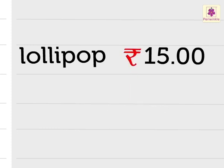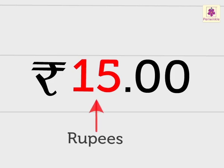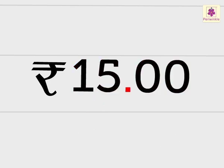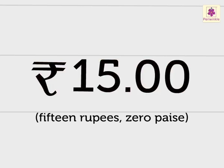We use this symbol instead of the word rupee. Now, let us see what 15.00 means. The number 15 indicates the rupees and the two 0s indicate the paisa. The dot is used to separate the rupees from the paisa. The rupees are written to the left of the dot, and the paisa are written to the right of the dot. Two places are used when writing the paisa after the dot. We read this as 15 rupees 0 paisa.